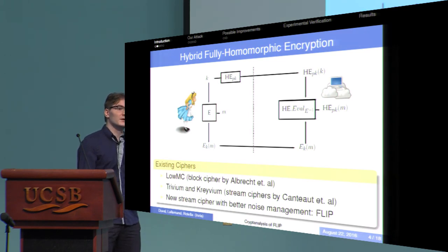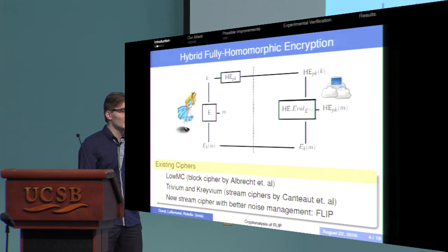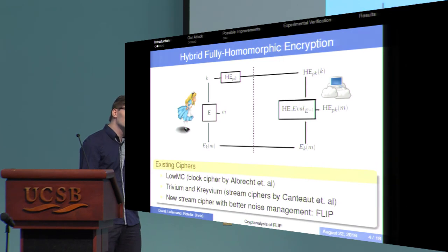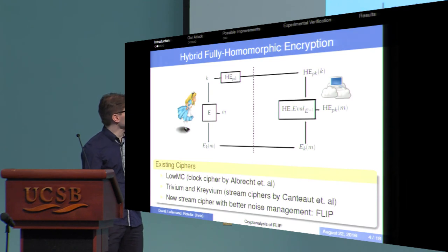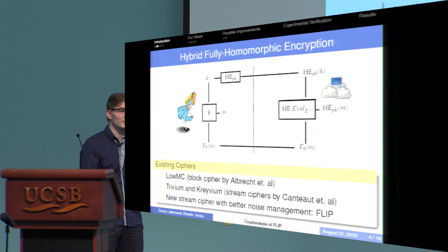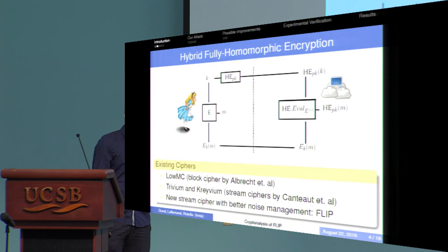There's still a problem: the homomorphic encryption algorithms we have use a parameter called noise. If this noise grows too big, it becomes very costly to handle. So we have to limit the amount of noise, and noise grows mostly from non-linear operations done homomorphically — for instance, multiplications. So for all functions that are applied homomorphically, you want to limit the number of multiplications. Here, the function applied homomorphically is the inverse evaluation of the symmetric encryption algorithm, so you want to limit the number of multiplications in this.